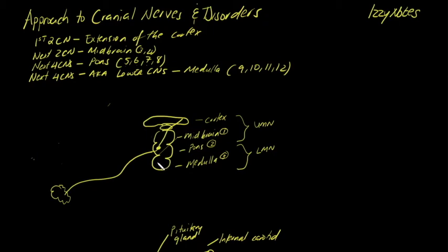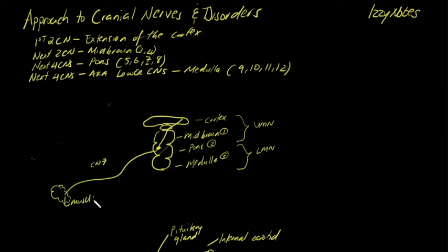Whenever you have a cranial nerve abnormality, it can typically be at four main areas for localization. Taking cranial nerve seven as an example — it originates from the pons and supplies all the muscles of facial expression. A lesion can be at the nerve itself as it runs, or the lesion can be in the pons, at the nucleus, which is simply where the nerve originates in the brainstem.